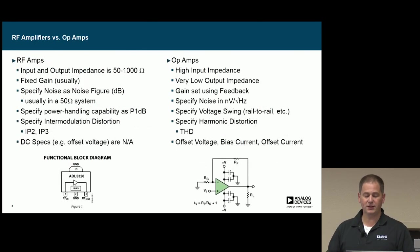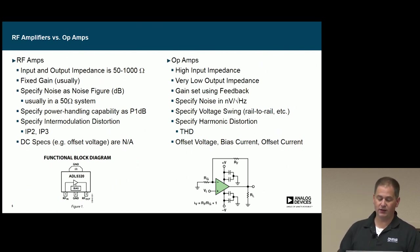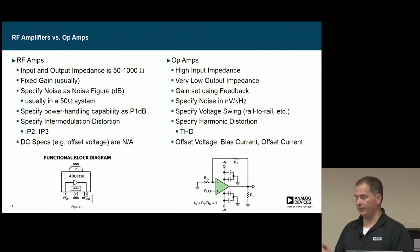RF amplifiers versus op amps. Typically RF amplifiers are 50 ohms specified and power handling is like a P1dB number, as opposed to op amps which are high input impedance and low output impedance and need lots of R's and C's around them to actually set the gain. And typically RF amps have no DC specs on them where op amps actually would.